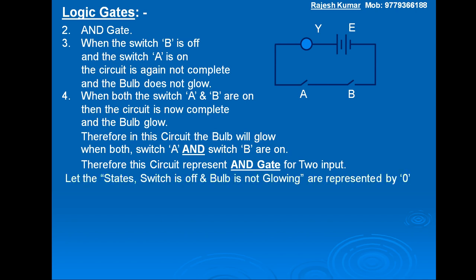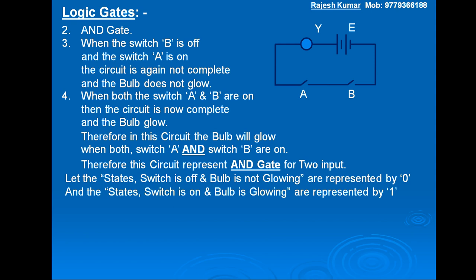Let the states where a switch is off and the bulb is not glowing be represented by 0, and the states where a switch is on and the bulb is glowing be represented by 1. Then the truth table for the AND gate for two inputs is as follows.